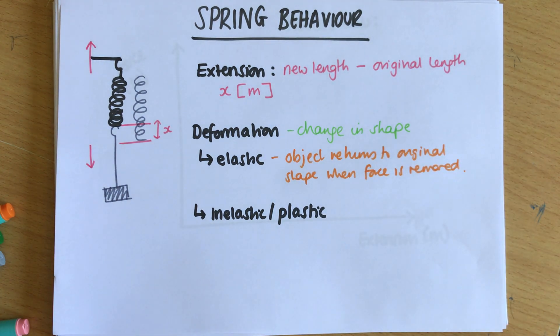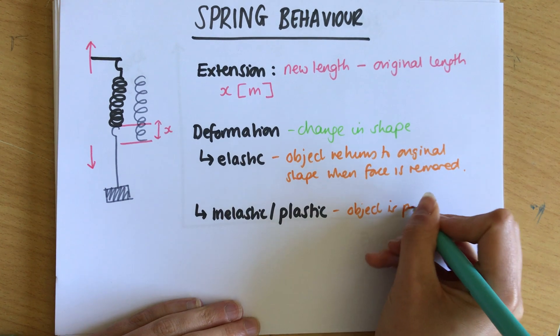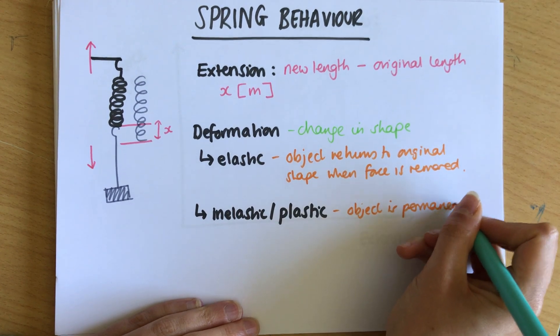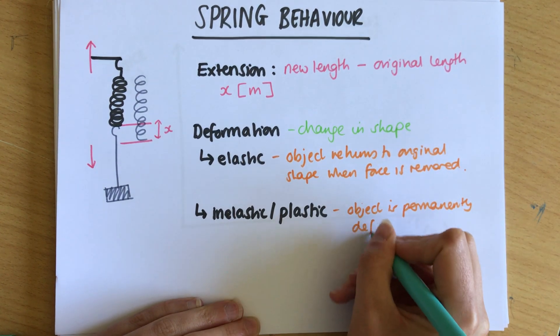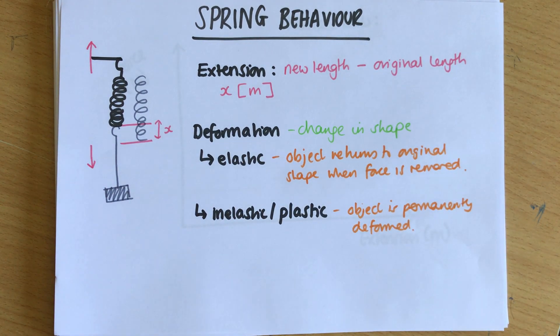An inelastic or plastic deformation is where the object is permanently deformed—it doesn't return to its original shape. It might go back a little bit but it doesn't go back the whole way. A common example of this is play-doh.